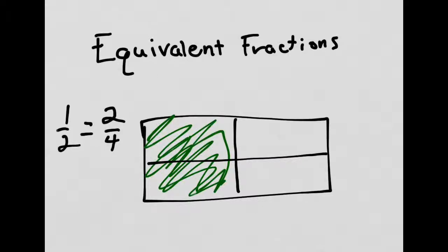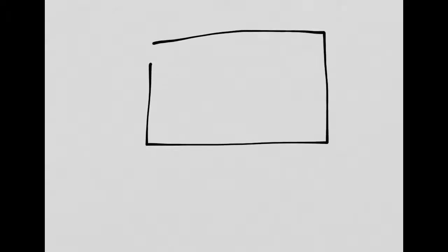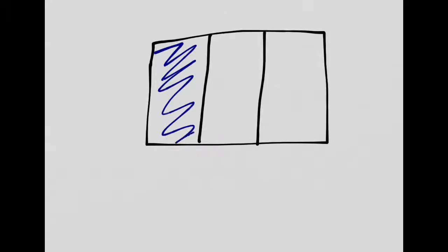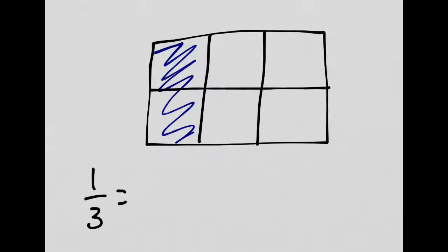This works with all sorts of fractions. Let's take a look at another example. I'm going to draw another rectangle and cut this one into thirds. I'm going to shade one third. And then I'm going to slice that rectangle in half again. Now what do I have? Let's count: one, two, three, four, five, six — I've partitioned this rectangle into six parts. Two of them are shaded. So one third is the same as two sixths. They're equivalent fractions — they're equal, they're worth the same amount. Two sixths is taking up exactly the same amount of space as one third was.